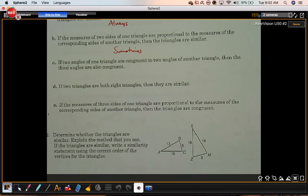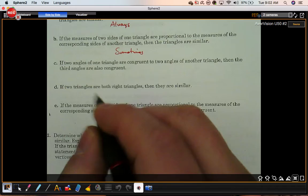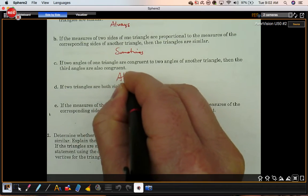Part C says if two angles of one triangle are congruent to two angles of another triangle, then the third angles are also congruent. That's always. That's your third angles theorem.